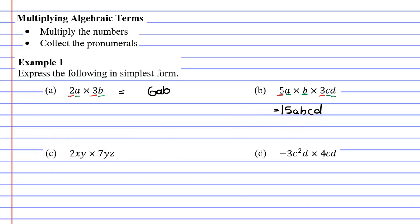Moving on to question C, our numbers are 2 and 7. When we multiply them, 2 times 7, we get 14.